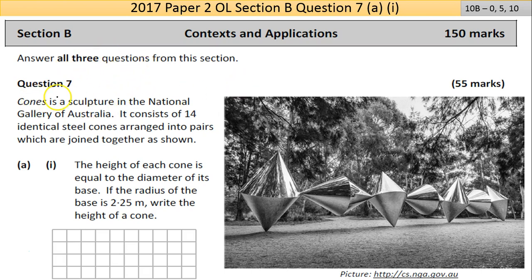This is Question 7a. Cones is a sculpture in the National Gallery of Australia consisting of 14 identical steel cones arranged in pairs as shown in the diagram. The height of each cone is equal to the diameter of its base. If the radius of the base is 2.25 meters, write the height of the cone.